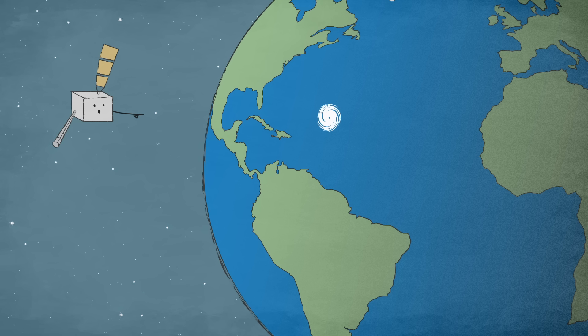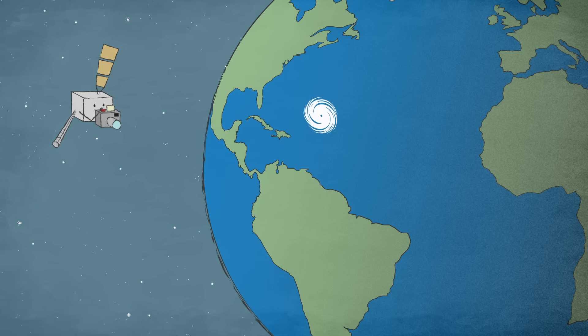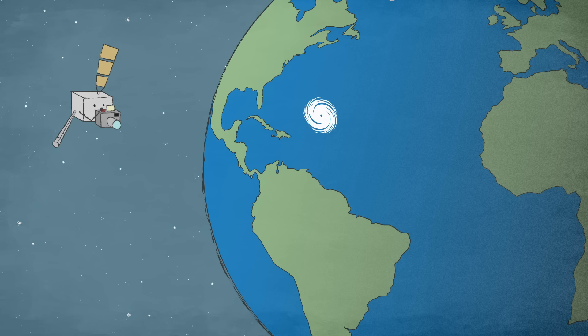Thankfully we have weather satellites that are constantly monitoring the conditions down here on Earth. The GOES are a series of weather satellites that scan the hemisphere every 10 minutes and the US every 5 minutes, keeping an eye on conditions that might cause a hurricane to form.